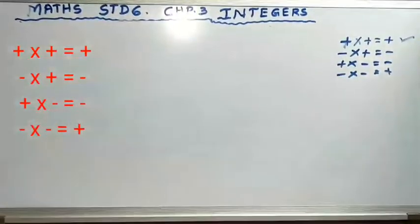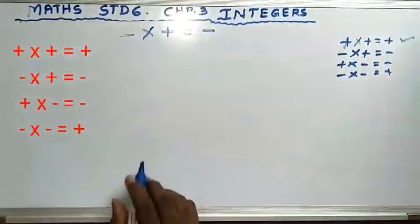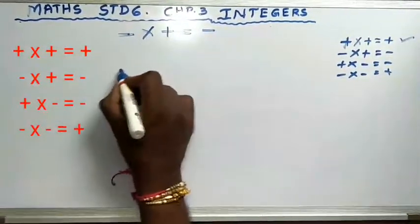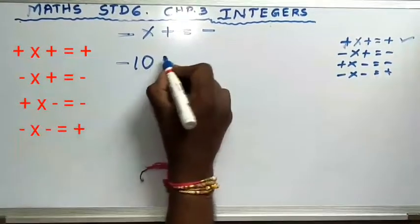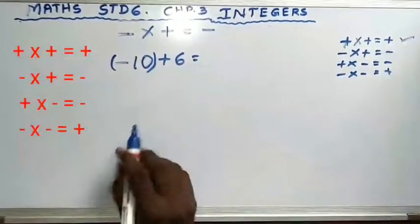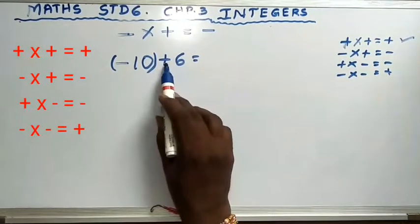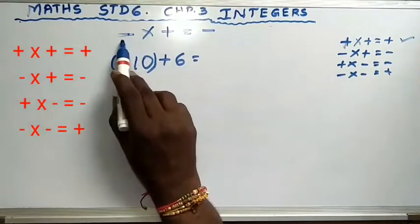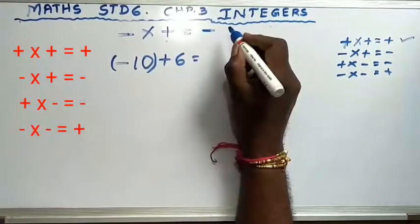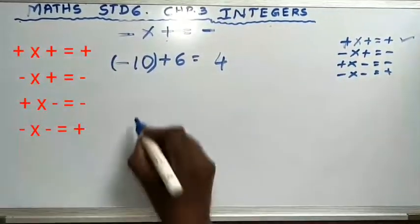Now the second formula: minus into plus equals minus. Minus into plus means the left side is minus and the right side is plus. Let's say minus 10 plus 6. In 10 I have a negative sign on the left side; in 6 I have a positive sign on the right side. Left side negative, right side positive — so you have to subtract. 10 minus 6 is 4. Now what sign does the greatest number have? 10 is greater, and 10 has a negative sign, so you write minus 4.